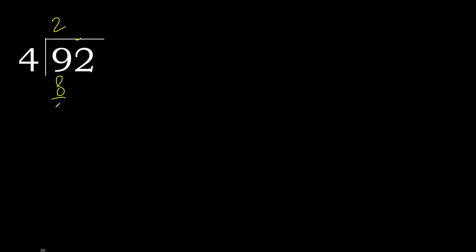9 minus 8 is 1. Bring down the next digit: 12. 4 multiplied by 3 is 12, which is not greater — ok. 12 minus 12 is 0. The remainder is 0 and there are no more digits, therefore we finish here.